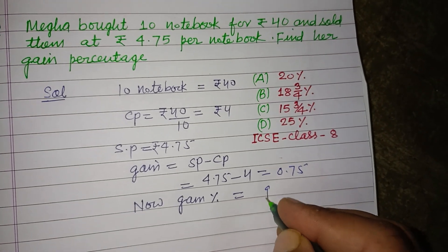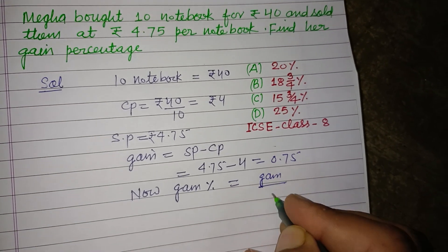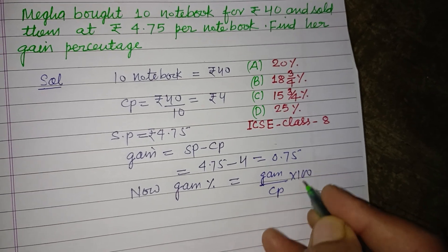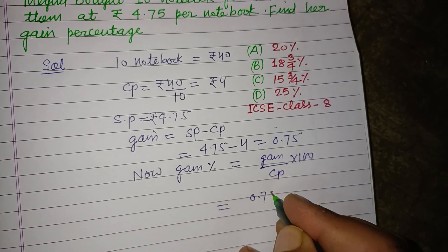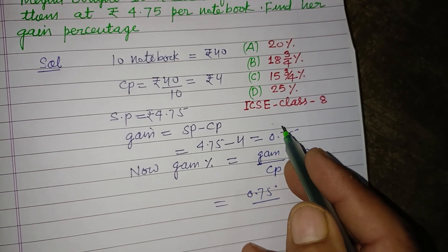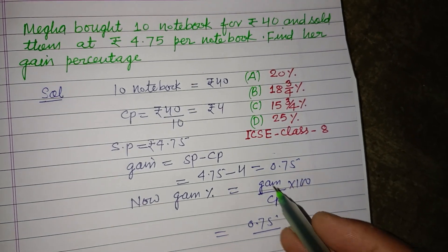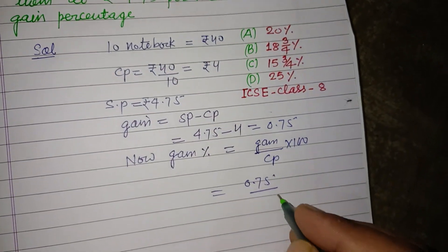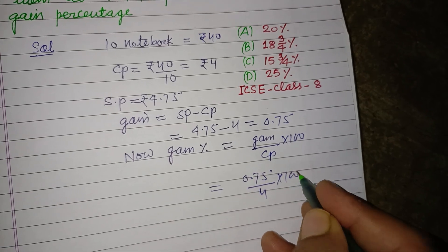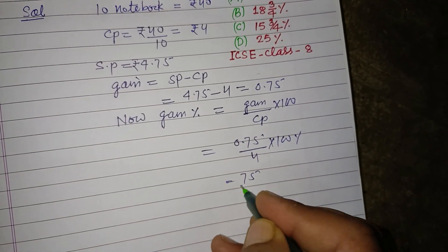Now gain percentage equals gain over CP into 100. So gain is 0.75 and CP is 4 into 100, which is 75 upon 4 percent.